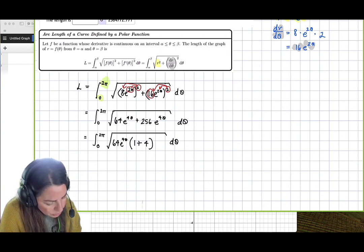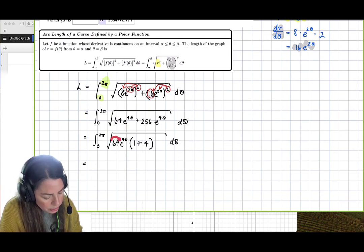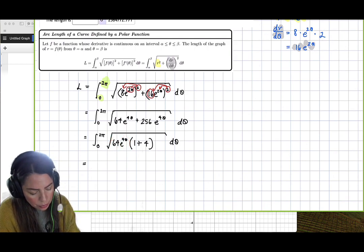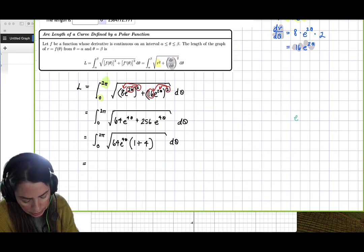So if I go ahead and do this, I'll get square root of 64 is 8 and the square root of e to the 4 theta. Now if we want, we can put this over here as e to the 4 theta square root.